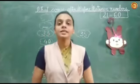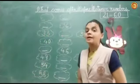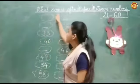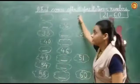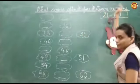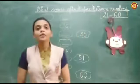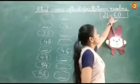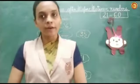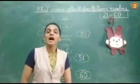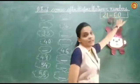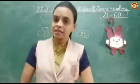Good morning kids. This is the Max class and today I am going to teach you what comes after, before and between numbers. Today I am going to teach you 21 between 60 numbers. Aaj apan after, before and between numbers sikhenge, joh 21 se leke 60 tuk ke beech ke numbers hai.